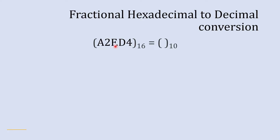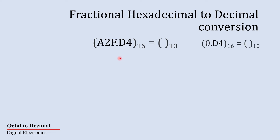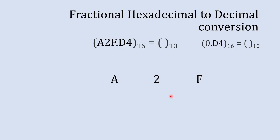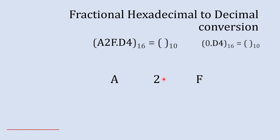To solve this, we'll start with the whole number part and set the fractional part aside for now. To convert this hexadecimal into decimal, we'll start with the rightmost digit — the ones place — and then go to the tens place and hundreds place.